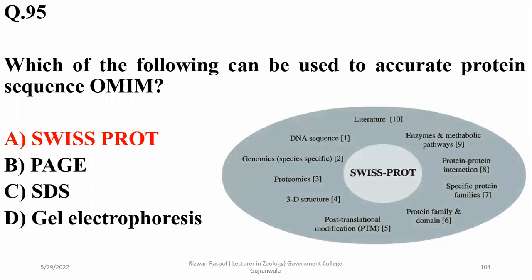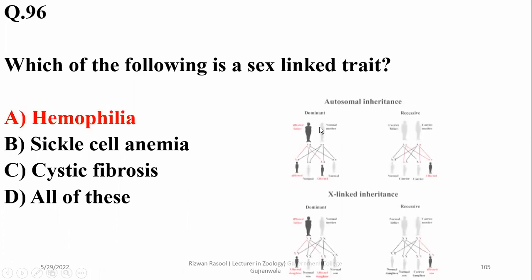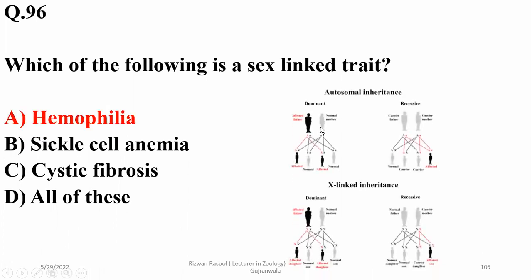BLAST is broadly used in proteomics as well, or to understand protein-protein interactions. Question 96: Which of the following is a sex-linked trait? Sex-linked traits are located on X and Y chromosomes — like hemophilia. The rest of the two options are autosomal traits.